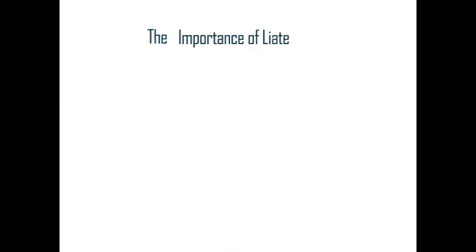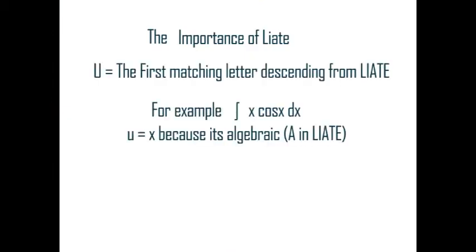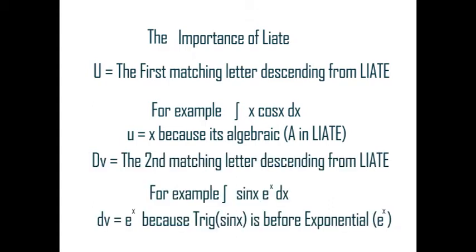The importance of LIATE: u equals the first matching letter descending from LIATE. For example, the integral of x cosine x dx — u equals x because it's algebraic, the A in LIATE. dv equals the second matching letter descending from LIATE. For example, the integral of sine x times e to the x dx.